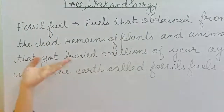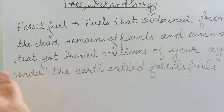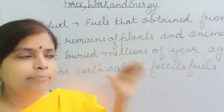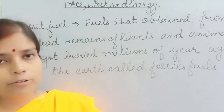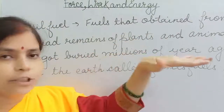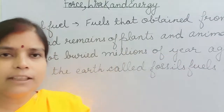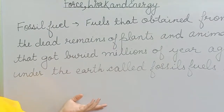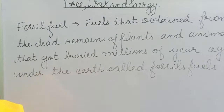Petroleum comes from sea creatures — living things in the sea. After their death, they were buried inside the layers of the sea or ocean. Due to the pressure of the water above and the temperature, these remnants converted into the fuel we call petroleum. From petroleum only we get petrol, kerosene, and many more things. This is also a fossil fuel obtained from under the sea.